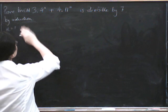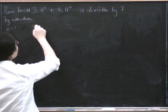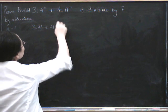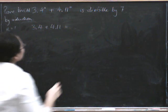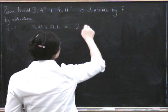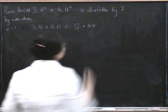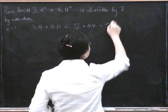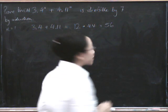If n equals 1, we get 3 times 4, plus 4 times 11. Well, 3 times 4 is 12, 4 times 11 is 44. So, when we add that together, we get 56, which definitely is divisible by 7.